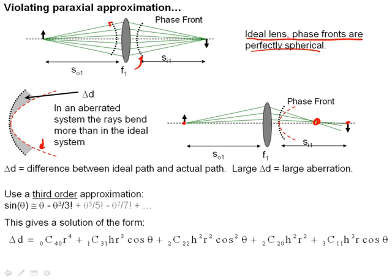We quantify our aberrations by a distance delta d that is the separation between the ideal phase front and the aberrated phase front. Large values of delta d correspond to large aberrations and images that are blurry and don't look very good.